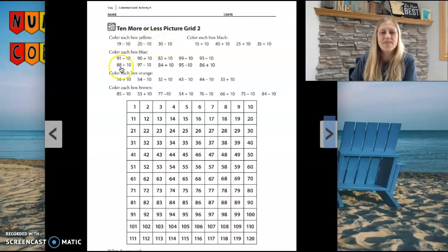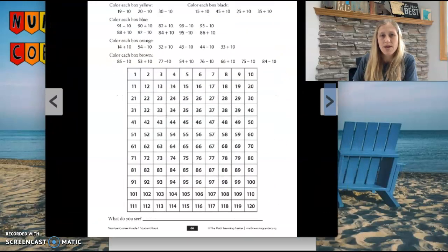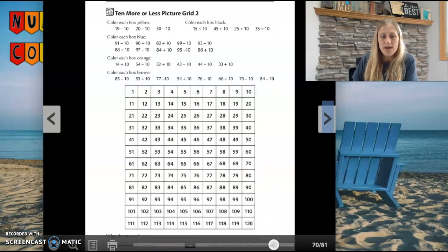These groups of equations you will color the box blue. These groups of equations you will color the box orange. These groups you will color the box brown, and then these groups you'll color them black. In the end, you will end up with a picture on the worksheet.